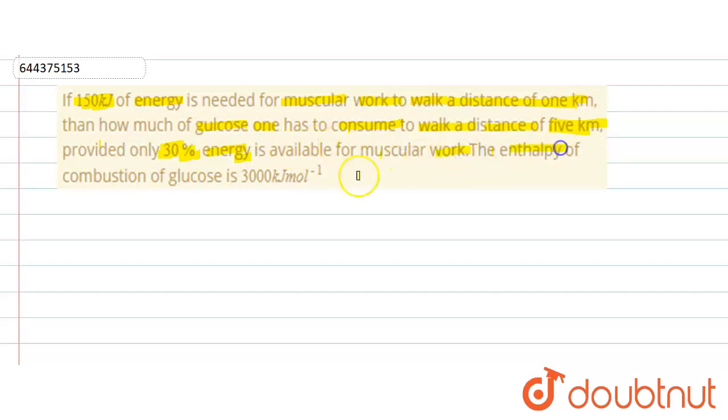So here for walking a distance of five kilometer, we have given 150 kilojoule. So energy consumed by walking a distance of five kilometer is 150 multiplied by five kilojoule.